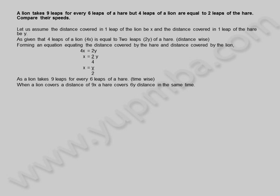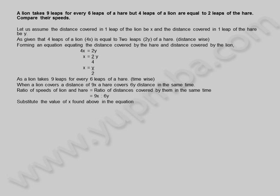When a lion covers a distance of 9x, a hare covers 6y distance in the same time. The ratio of speeds of lion and hare is equal to the ratio of distances covered by them in the same time, which is 9x to 6y. Substitute the value of x found above in the equation.